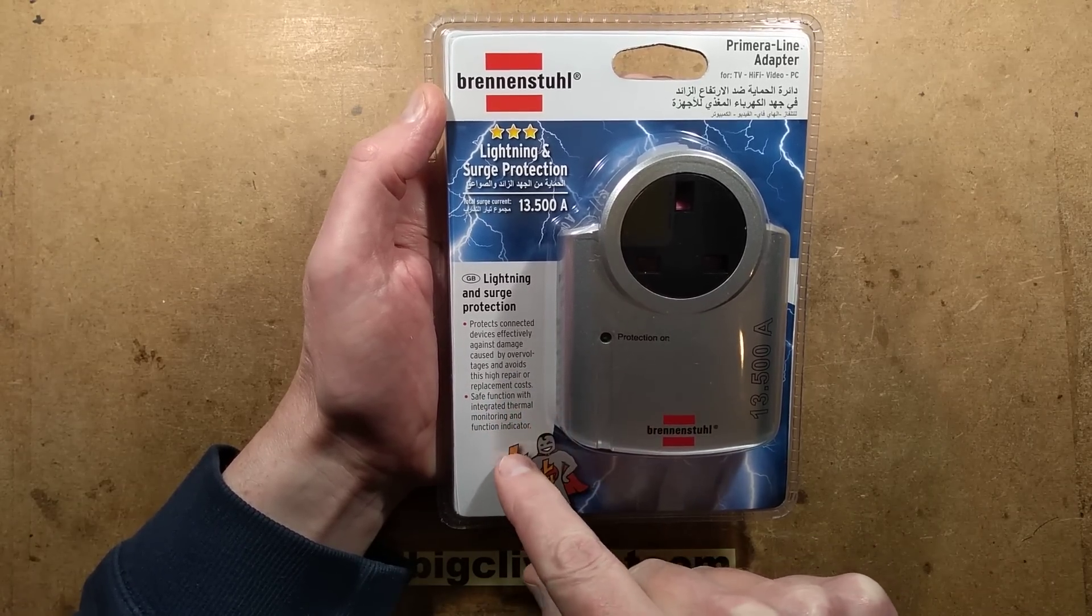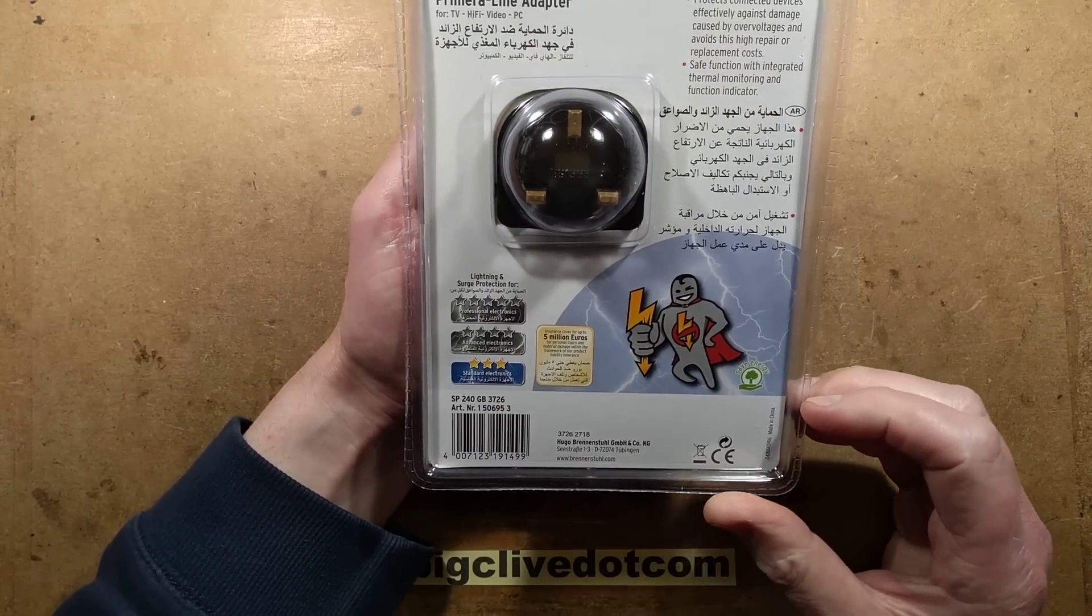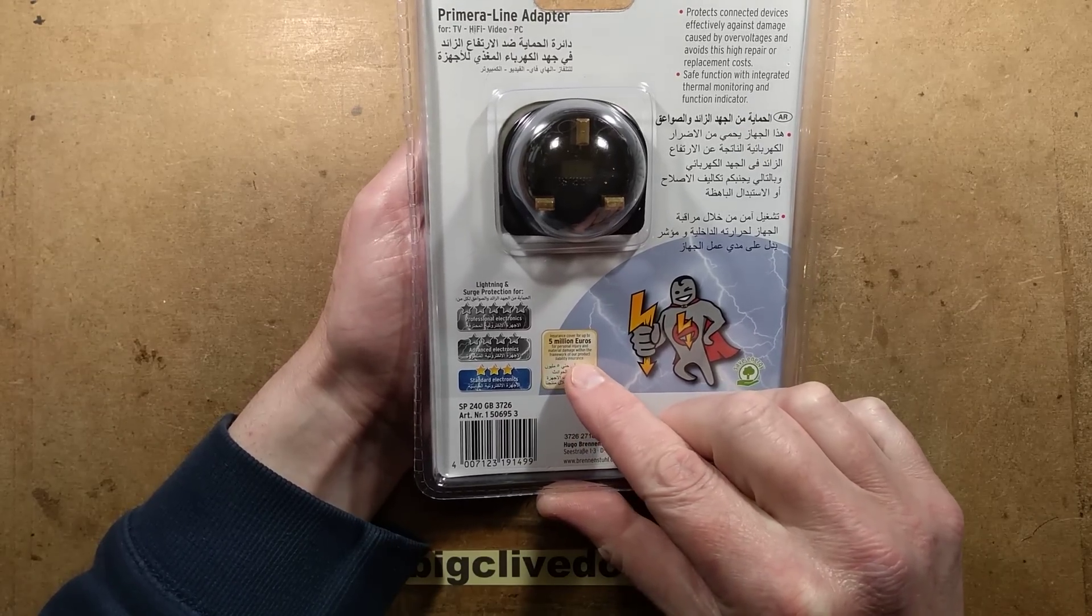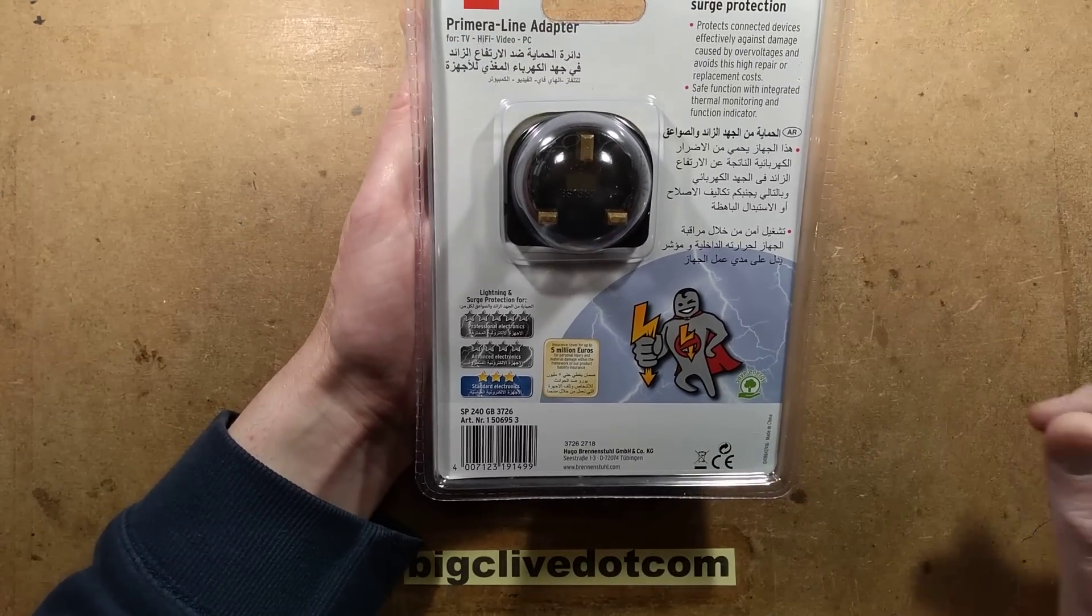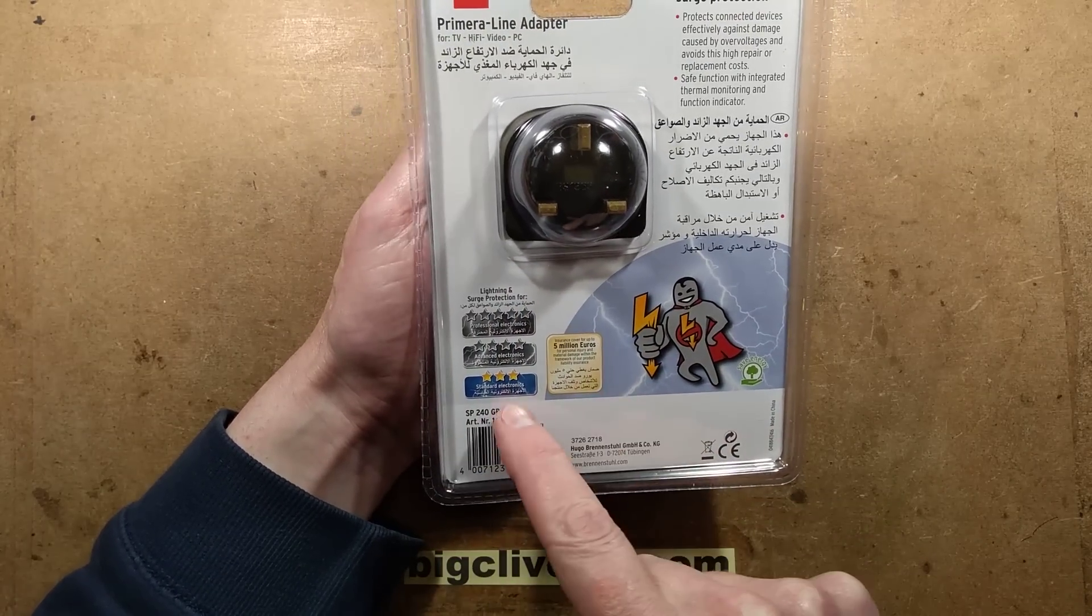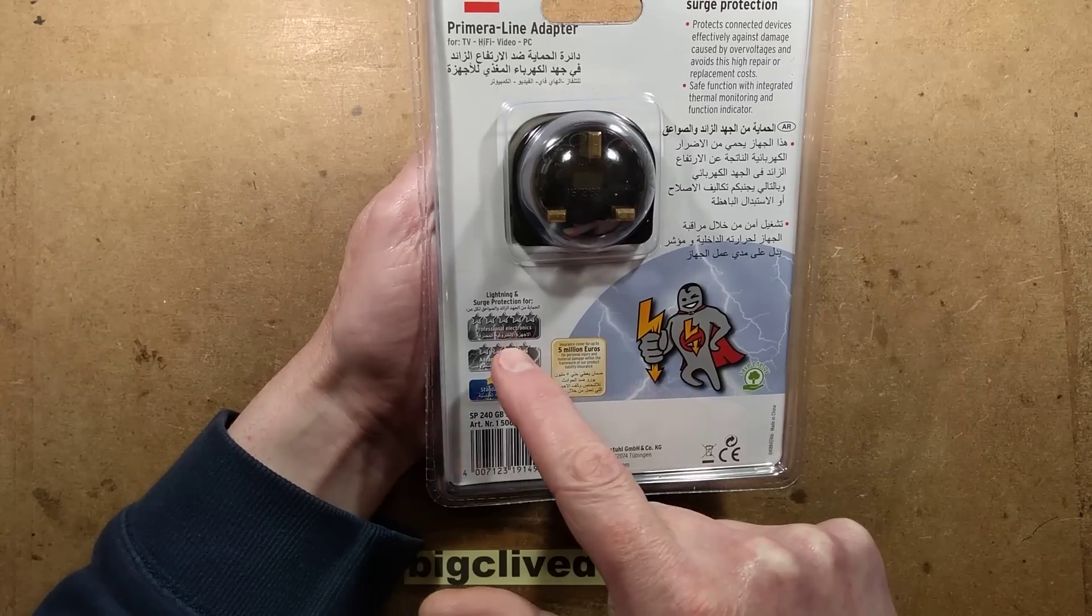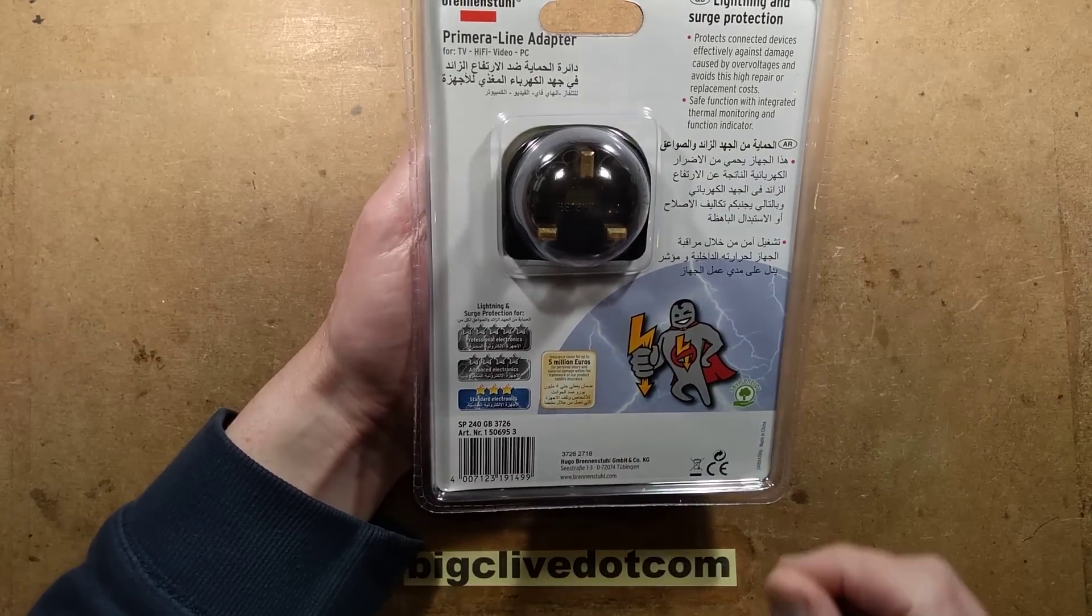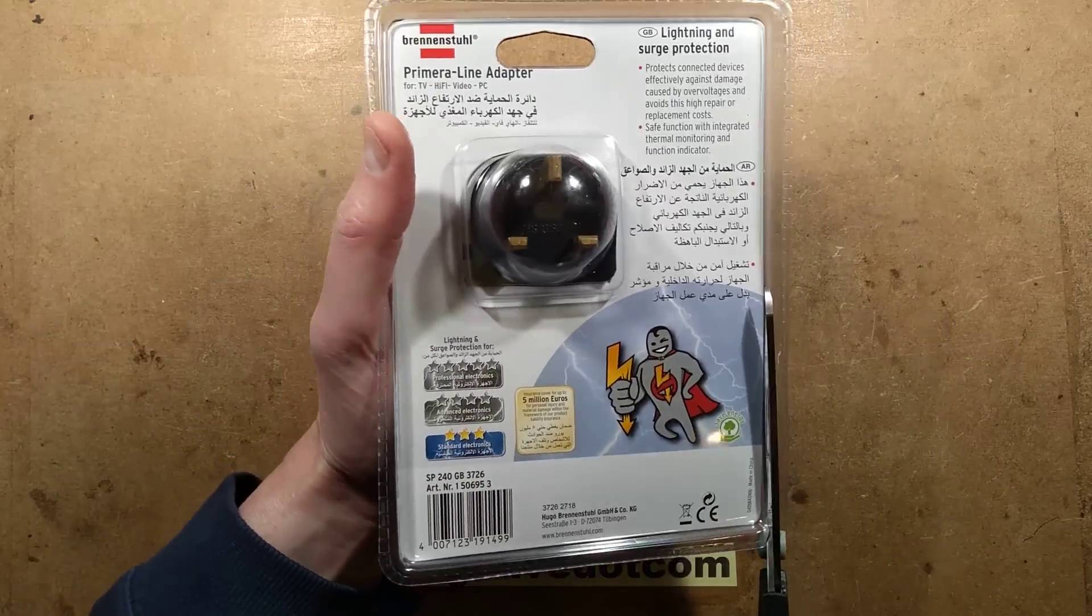Safe function with integrated thermal monitoring and function indicator. On the back it offers a 5 million euros insurance cover for personal injury and material damage within the framework of our product liability insurance, and I'm guessing the framework probably avoids all liability. I'm not even sure what this bit means. Lightning and surge protection for 3 gold stars for standard electronics, 4 silver stars for advanced electronics and 5 silver stars for professional electronics. I'm not even sure what that kind of means. I don't know, yeah let's open it up.